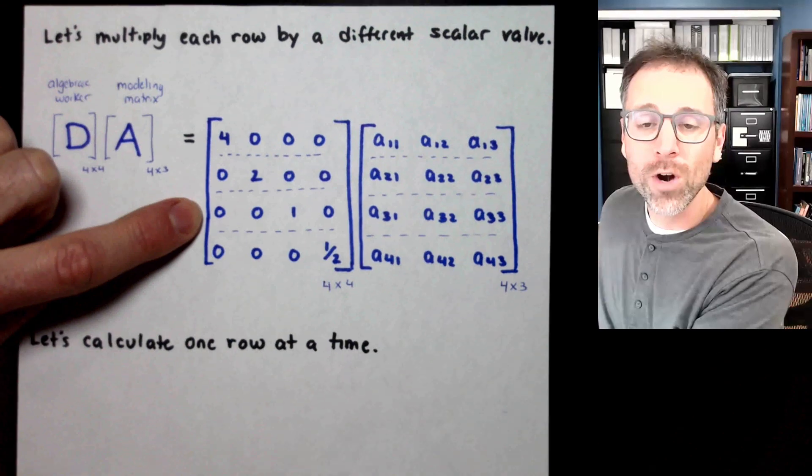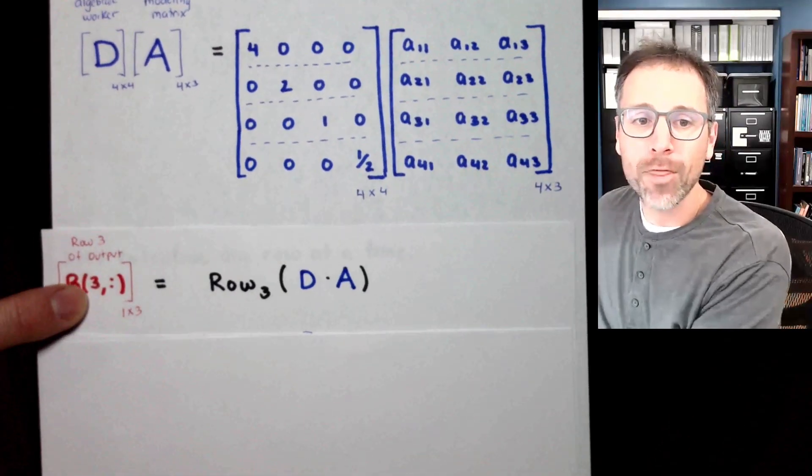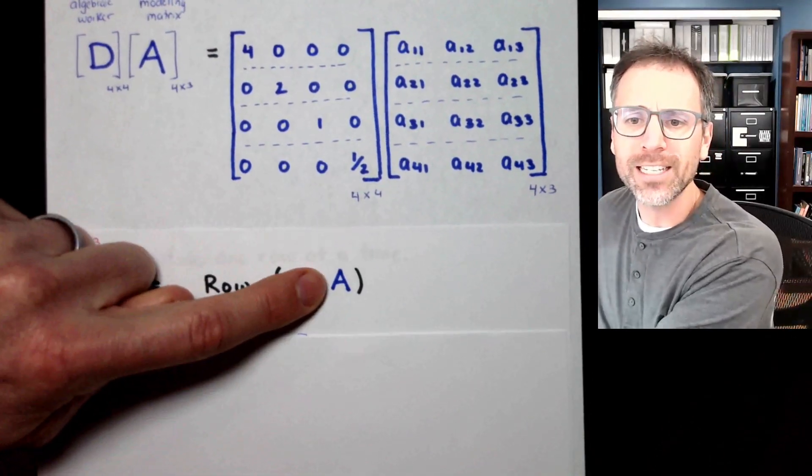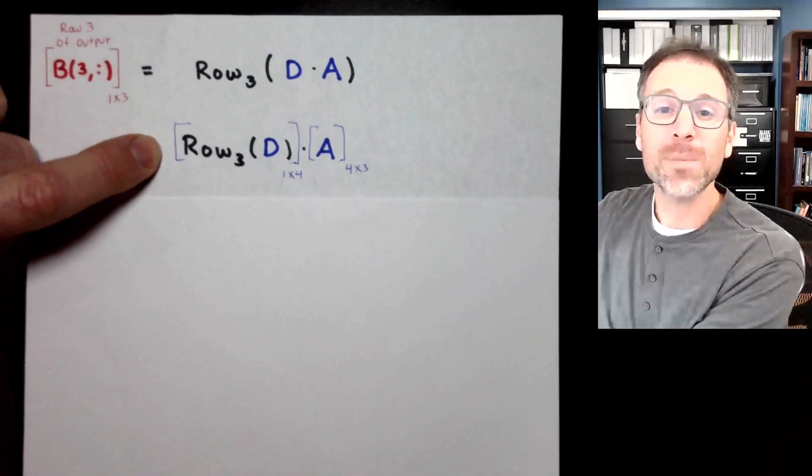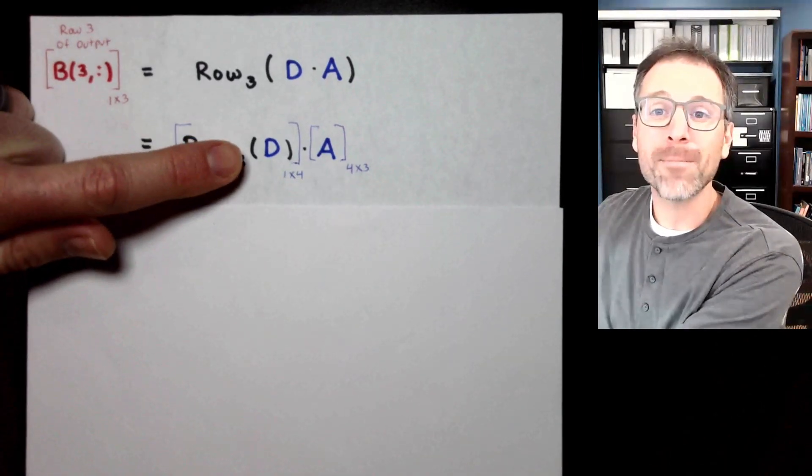Let's take a look at the third row. So I want to find the third row of my output, which is going to be the third row of D times A. By our definition, this is going to be row three of D multiplied by matrix A.